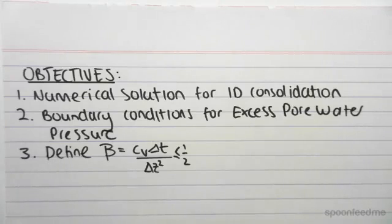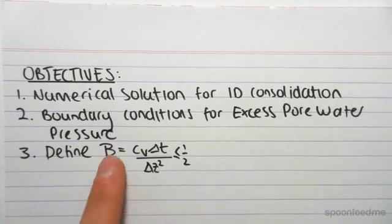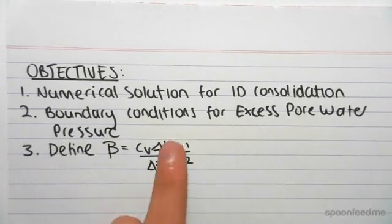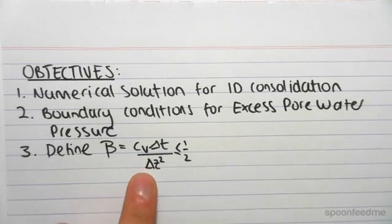Hey guys, the objective of this video is to discuss what a numerical solution is for 1D consolidation, to define some boundary conditions for our excess pore water pressure, and to define this beta term, which is CV times change in T and change in Z squared, which must be less than a half.